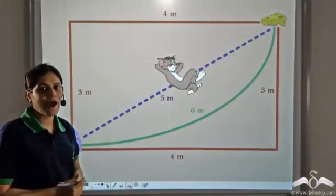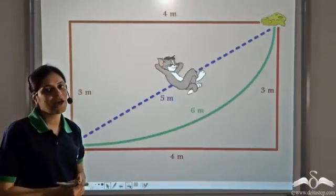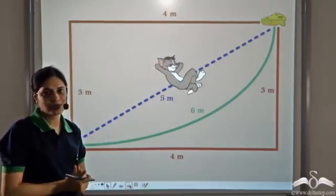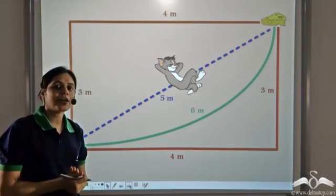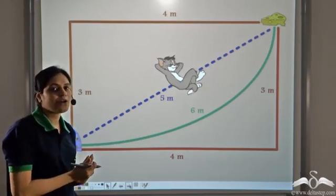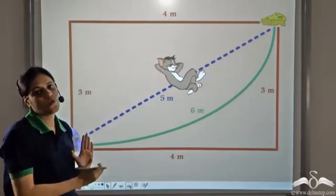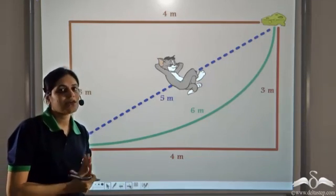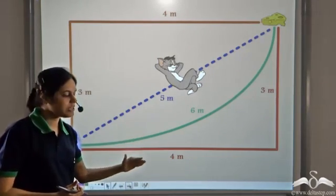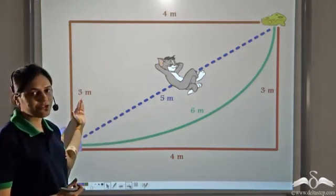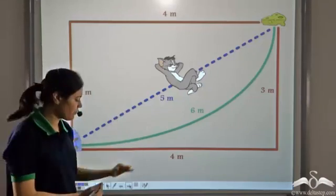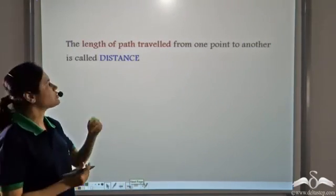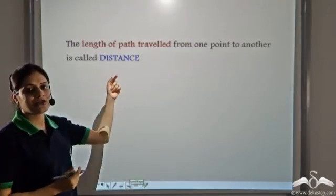So how many paths do you think are possible between these two points? There could be a number of paths between these two points, and given any two points, the length of the path travelled may be different in each case. This length of the path travelled is called distance.